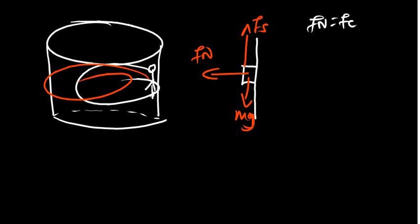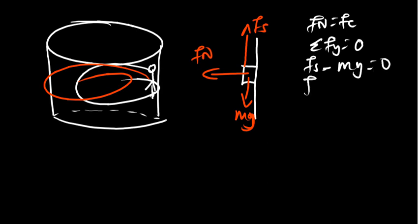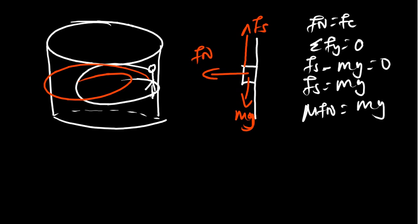The object is rotating in the x-direction, so forces in the y-direction must sum to zero. The friction force pointing up minus mg pointing down equals zero, so friction force equals mg. We know friction force equals mu times normal force, so mu times FN equals mg. Since FN equals centripetal force, it becomes mu times centripetal force equals mg.